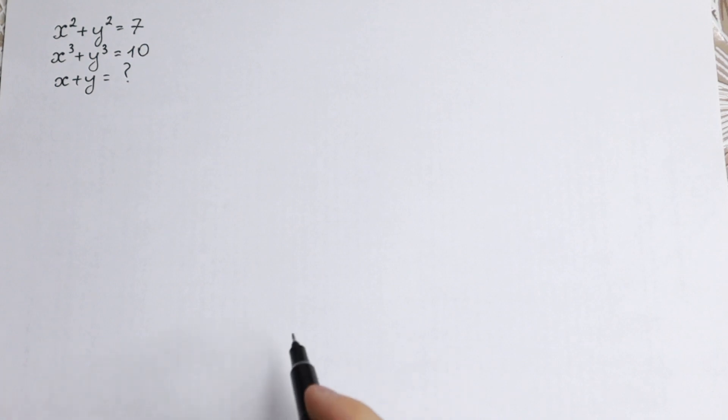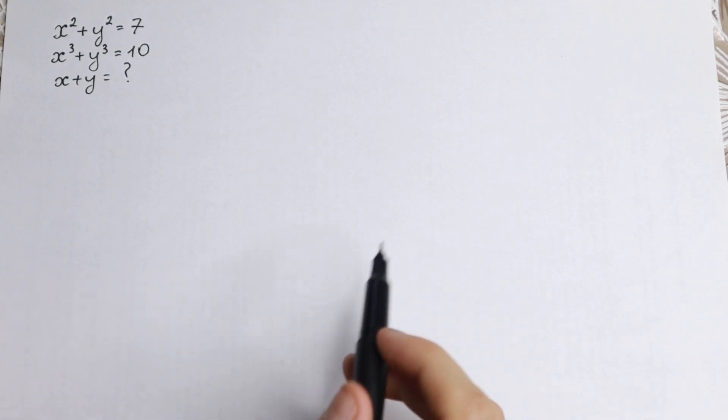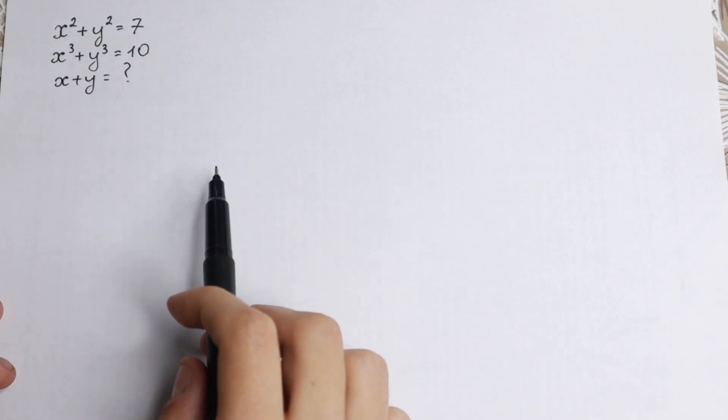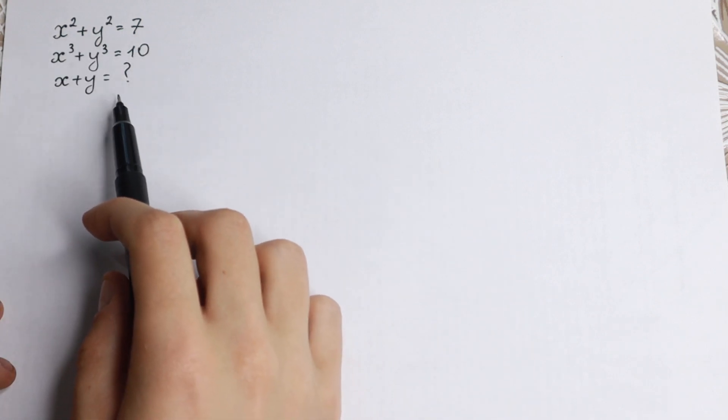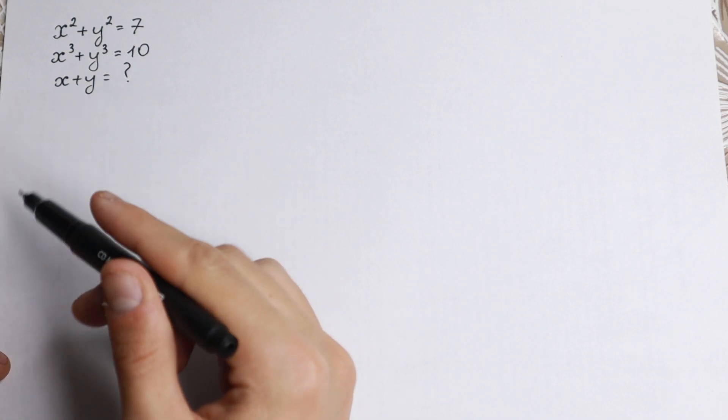Hello everyone, welcome back to higher mathematics! Really interesting algebra problem today. We know that x squared plus y squared equals 7, x cubed plus y cubed equals 10, and we need to find the sum x plus y.